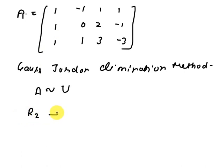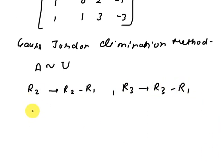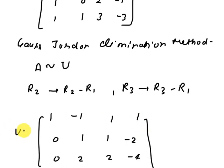Then we get R2 is R2 minus R1 and R3 is R3 minus R1. Then here we get 1 minus 1, 1, 1, 1, first row as it is. Second is 0, 1, 1, minus 2. This one is 0, 2, 2, minus 4. So now this is U.